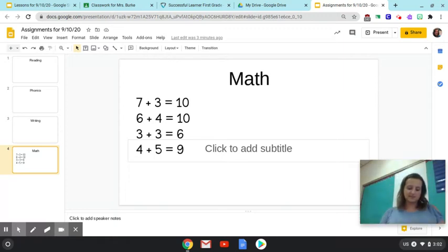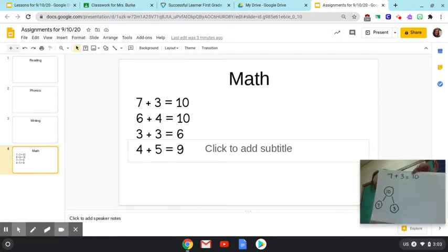And when I fill it in, I put the total at the top, 10, seven and three are the two small parts of the number bond. So my number bond is now complete. So that's one thing I need you to do.